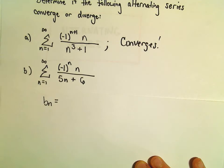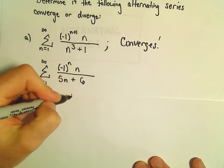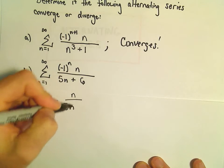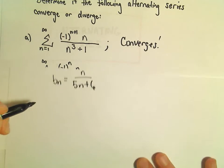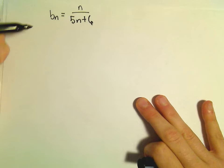So in this case, again, if we get rid of the alternating part, we're left with n over 5n plus 6. So, two things we have to look at for this case.